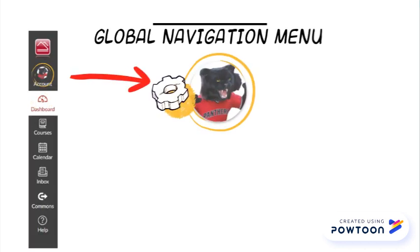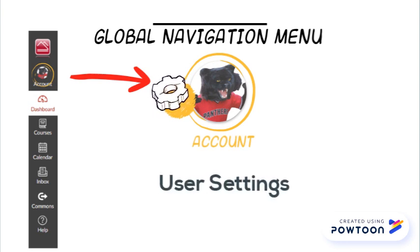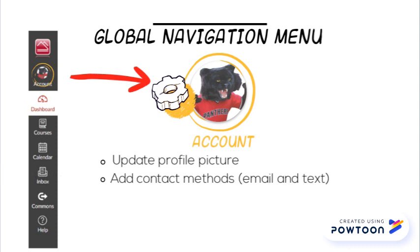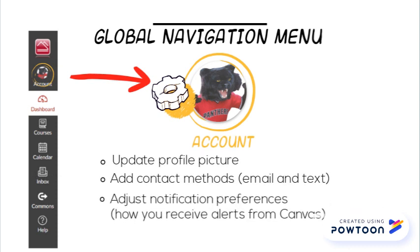Selecting the account link will allow you to view your user settings. Here you can add a profile picture, set additional contact methods, and adjust your Canvas notification preferences.